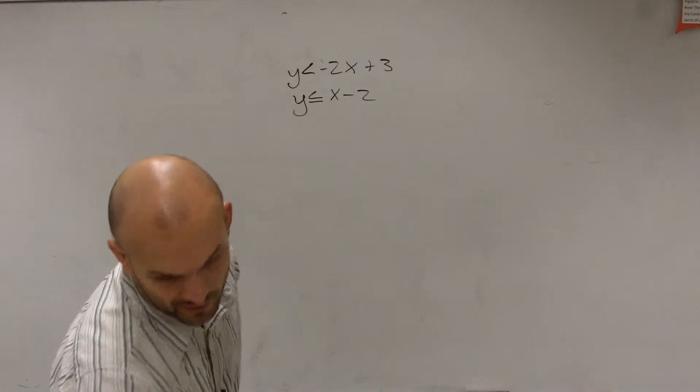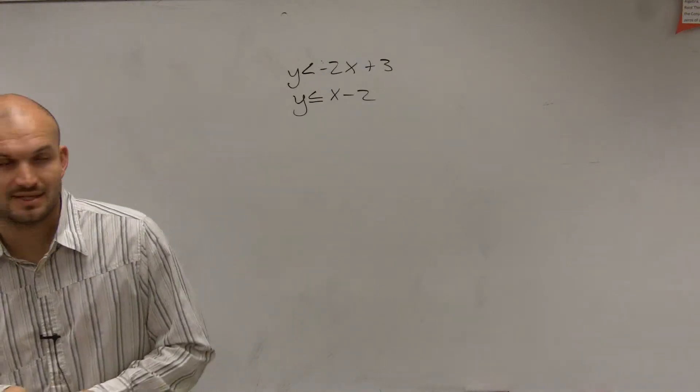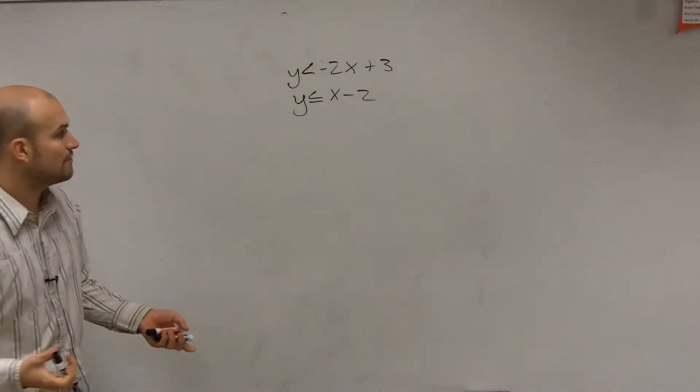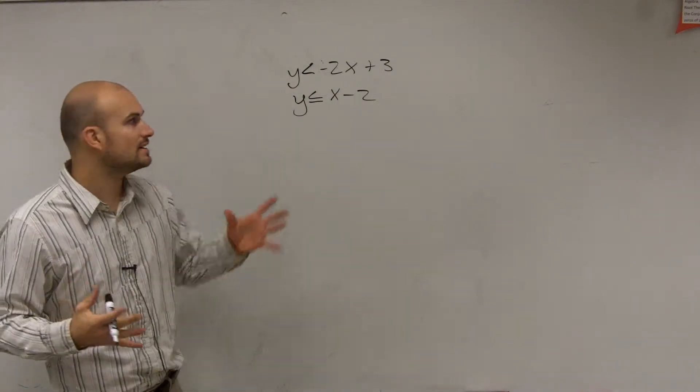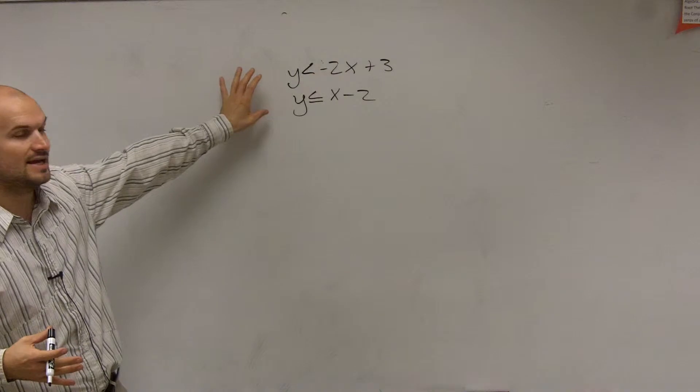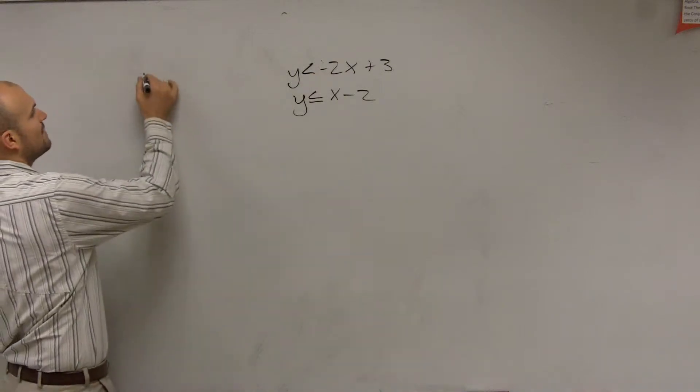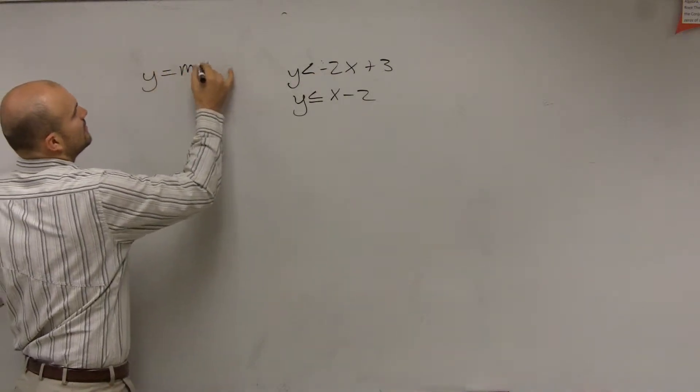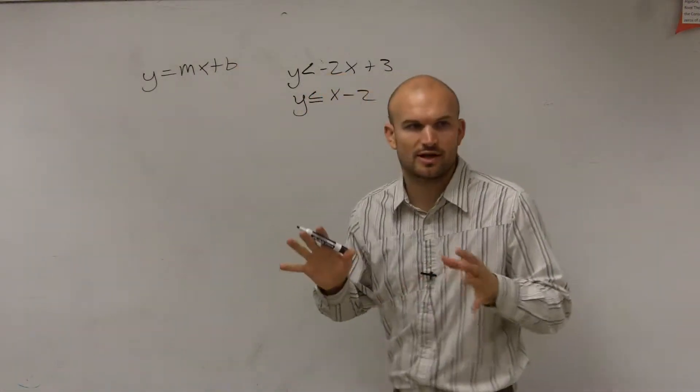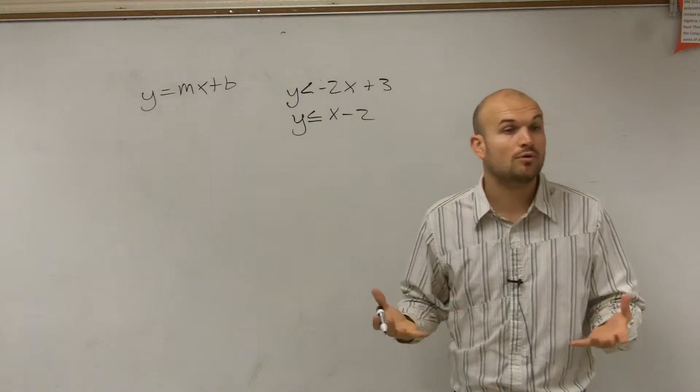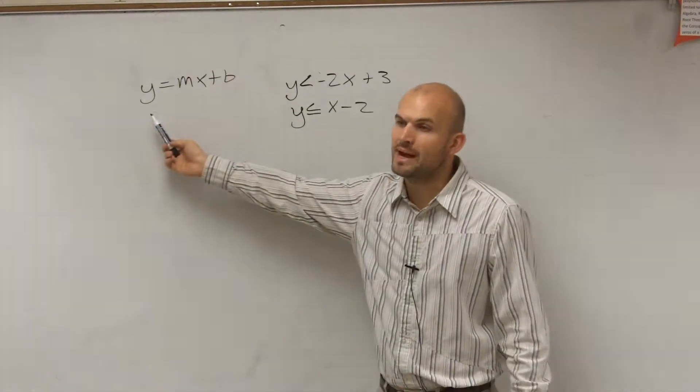So what we need to do is we need to graph both of these. And fortunately for number 8, we at least have them in slope-intercept form, right? Forget about the inequality sign for a second. Let's just remember that when we have an inequality or an equation, when we have it solved for y, we say it's in this form, y equals mx plus b. I'm saying forget about the inequality sign. We just want to look at what form our inequality is in. And it's in this format, right?